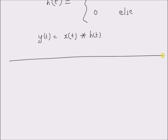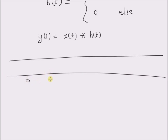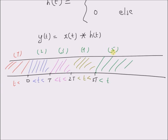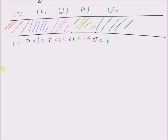The different intervals can be visualized as follows, with points at 0, T, 2T, 3T. The five intervals are: t less than 0, 0 < t < T, T < t < 2T, 2T < t < 3T, and t greater than 3T. We have to solve the convolution integral for these five different intervals.